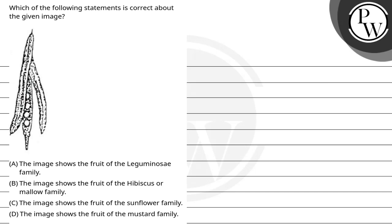Hello Bachchan, let's see this question. The question says which of the following statements is correct about the given image? Options are: the image shows the fruit of leguminosae family, the image shows the fruit of hibiscus or mallow family, the image shows the fruit of sunflower family, and the image shows the fruit of mustard family.